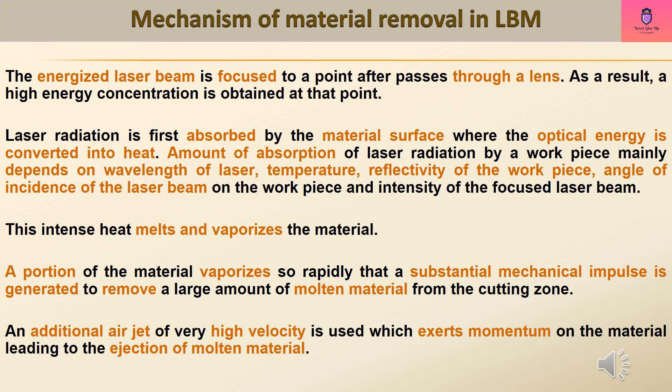The energized laser beam is focused to a point after passing through a lens. As a result, a high energy concentration is obtained at that point. Laser radiation is first absorbed by the material surface where the optical energy is converted into heat. Amount of absorption of laser radiation by a workpiece mainly depends on wavelength of laser, temperature, reflectivity of the workpiece, angle of incidence of the laser beam on the workpiece, and intensity of the focused laser beam.